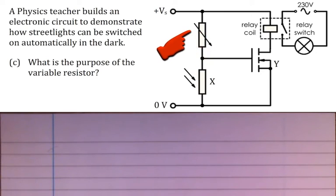So, by increasing the resistance of this variable resistor, and therefore the voltage across it, what that's meant is this LDR needs to be in even darker conditions for the MOSFET to conduct.